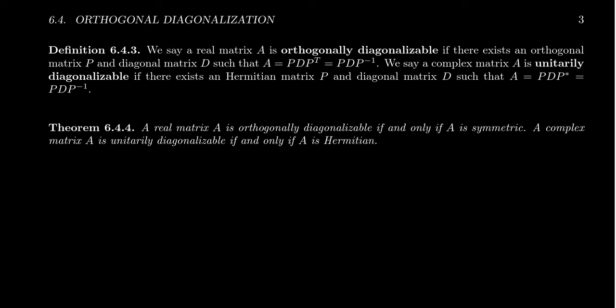We saw in the previous example that we had a symmetric matrix, and I was able to orthogonally diagonalize that matrix. It turns out that for every symmetric matrix you can ever think of, it can always be orthogonally diagonalized. That is, a matrix being symmetric is equivalent to being orthogonally diagonalizable — which is an incredible statement. Symmetry of a matrix is easy to check, but orthogonal diagonalization is pretty intense. The two things are actually the same thing, believe it or not.